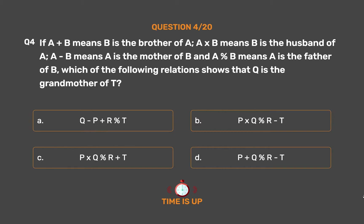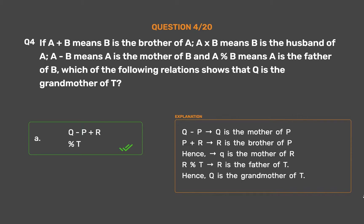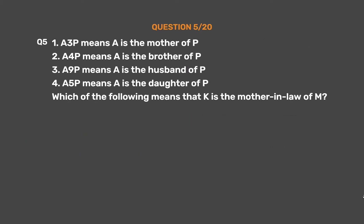The correct answer is Option A: Q − P + R % T. Q − P means Q is the mother of P. P + R means R is the brother of P, hence Q is the mother of R. R % T means R is the father of T. Hence, Q is the grandmother of T.